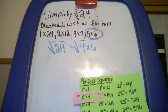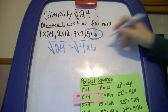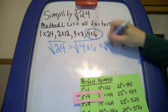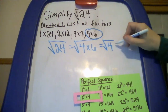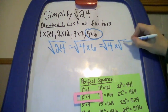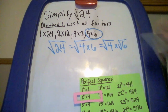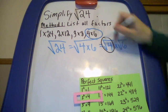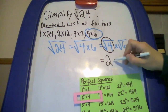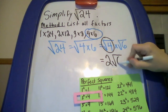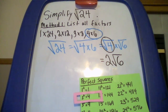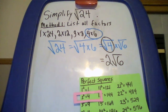We're going to rewrite this as the square root of 4 times the square root of 6. The square root of 4 is equal to 2, so our answer is 2 times the square root of 6. Listing all the factors is one way to find the simplification of the square root of 24. Now we're going to look at another way.